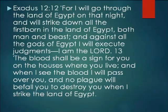Verse 12: 'For I will go throughout the land of Egypt on that night, and I will strike down all the firstborn in the land of Egypt, both man and beast. And against all the gods of Egypt I will execute judgments. I am the Lord. The blood shall be a sign for you on the houses where you live. When I see the blood, I will pass over you, and no plague will befall you to destroy you when I strike the land of Egypt.' Here it is again — God's judgment on the land of Egypt, and God makes a way of salvation.